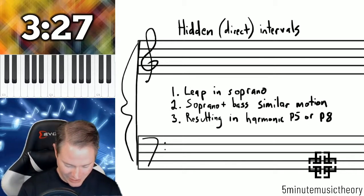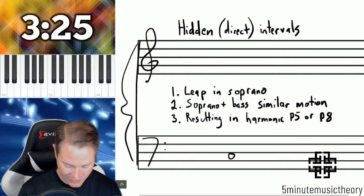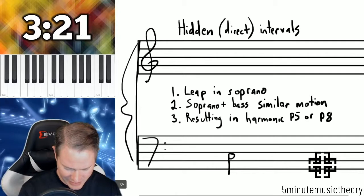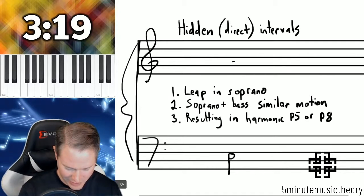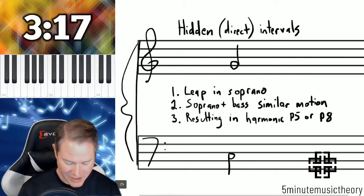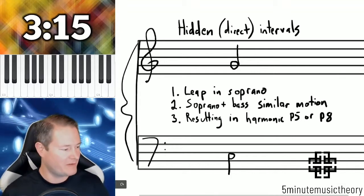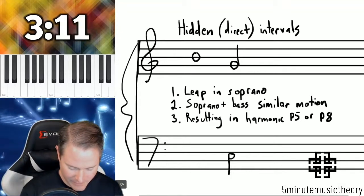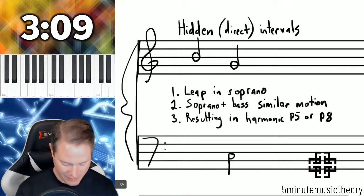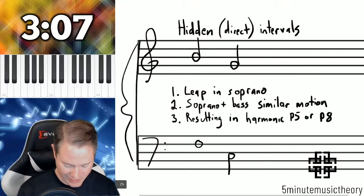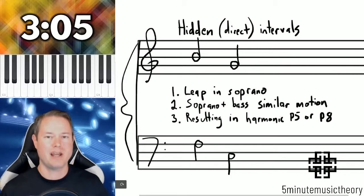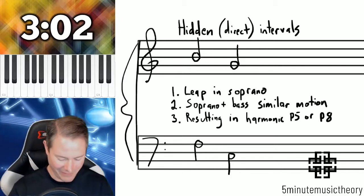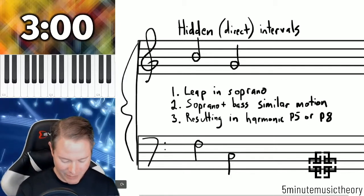Let's see — I'm going to write one like this. We'll go from a C up to a G. So that's going to be our perfect fifth — that's going to be the resulting interval. And then I'm going to move from a B and move the bass like this. So here's an example of a direct or hidden fifth.